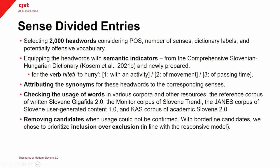While checking usage, we removed the candidates where usage could not be confirmed. We had quite a lot of borderline candidates which we chose to keep. We prioritized inclusion over exclusion, which is in line with the responsive model — we want to show a large amount of data to users and then help decide with their feedback what is actually relevant and what is not relevant for them.